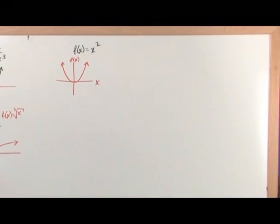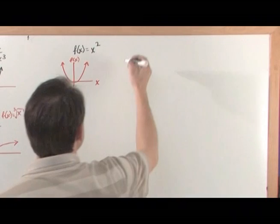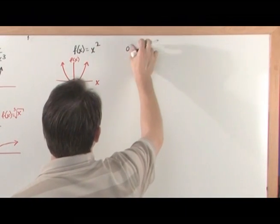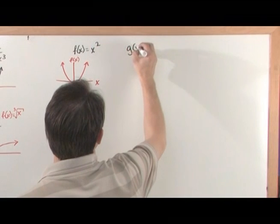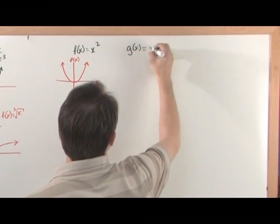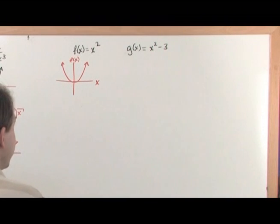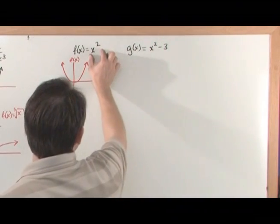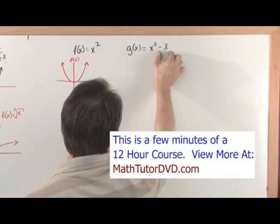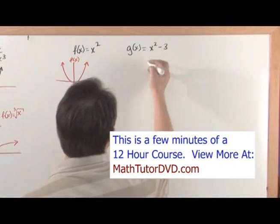Now, the next question is why don't you sketch g of x is equal to x squared minus 3. Now, notice in this case that we're taking our function x squared and we're just subtracting a constant value from it.